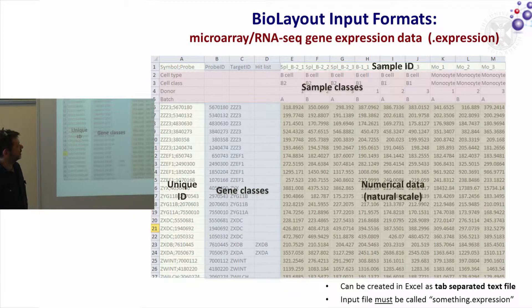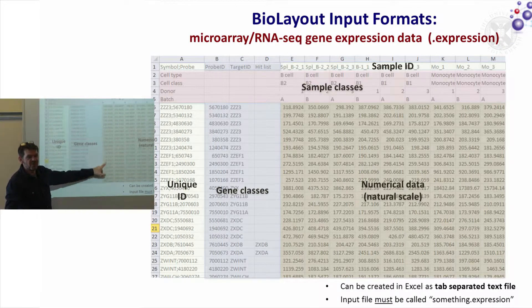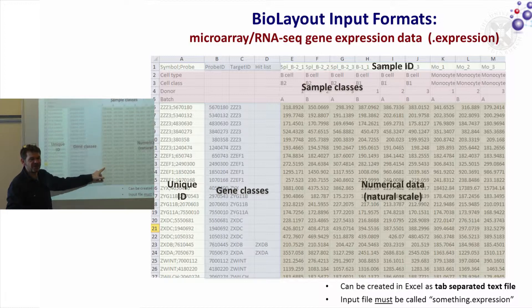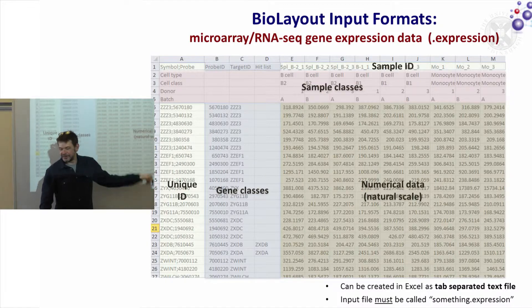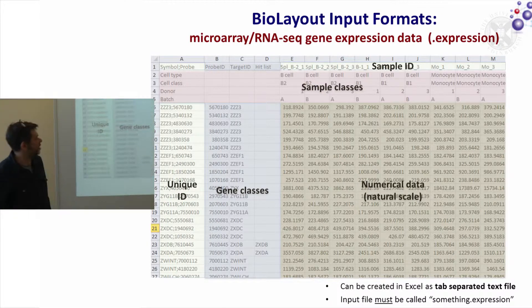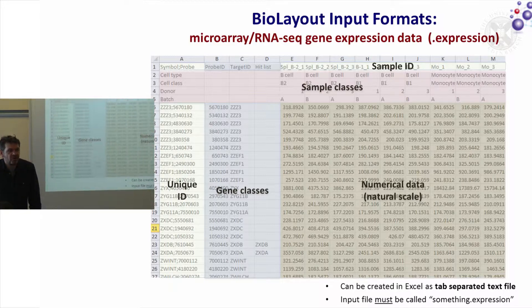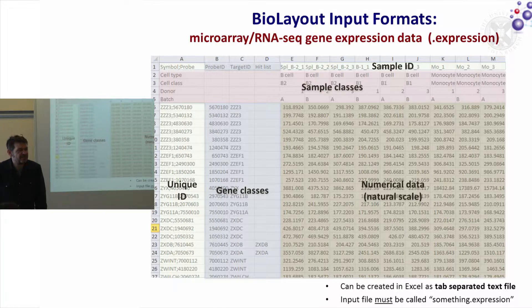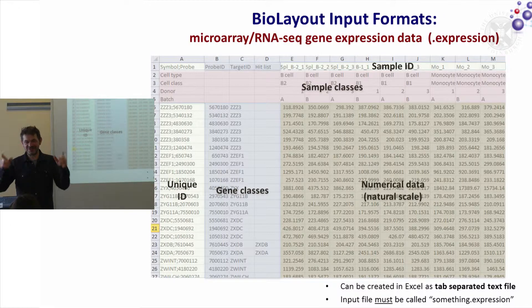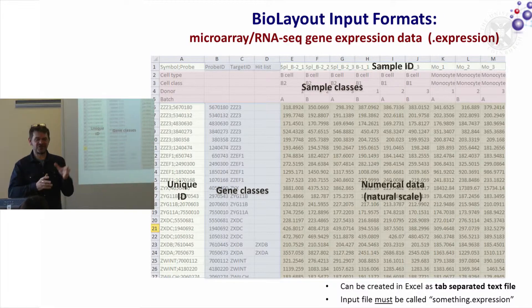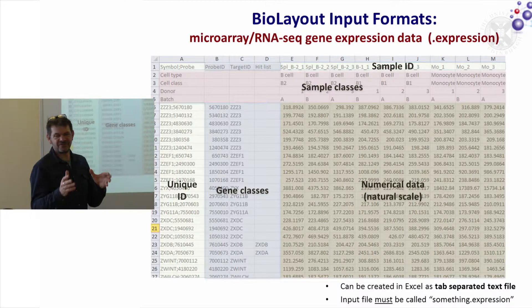Finally, it's your numerical data — the numbers that come off the machine that you've QC'd and normalized. One thing that bioinformaticians love to do is convert everything to log2. But if you know what a log2 value of eight means, you're a better person than me. I think of these as raw measurements — I understand the difference between 100 and 1000, but I'm less familiar with the difference between log2 of seven and log2 of ten.